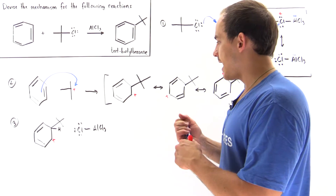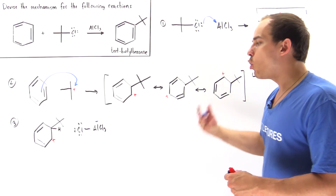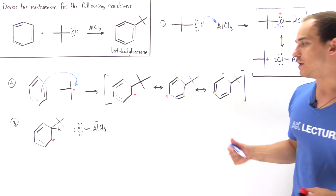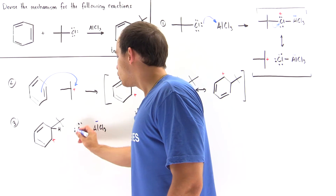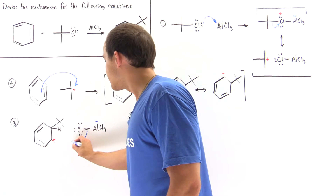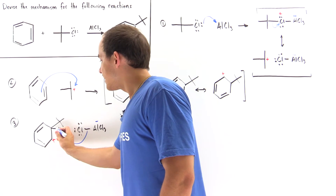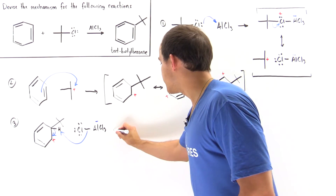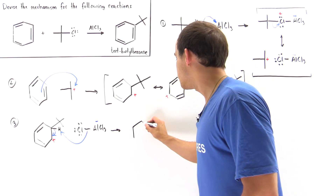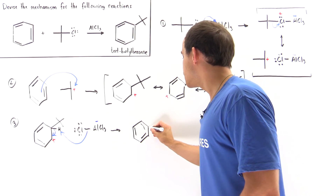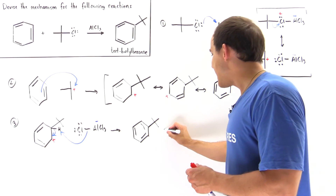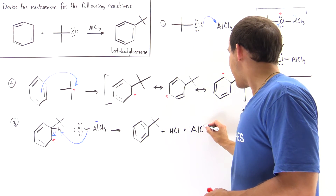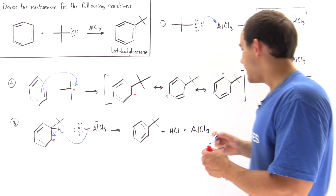This complex contains a negative charge. We not only want to reform aromaticity, we also have to regenerate our catalyst, because catalysts are not used up in reactions. What happens is the chloride uses this sigma bond and breaks it, taking the H atom. This sigma bond then becomes a pi bond between the two carbons on the benzene ring, reforming our benzene molecule now alkylated with the tert-butyl group — our tert-butylbenzene. In the process, we form HCl and regenerate our aluminum chloride catalyst.